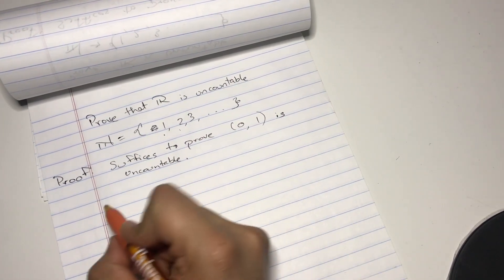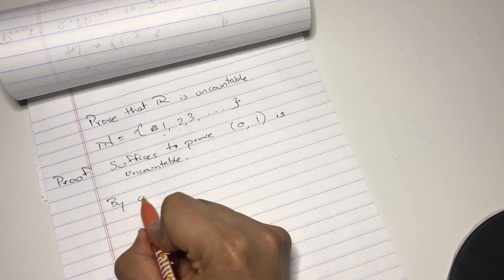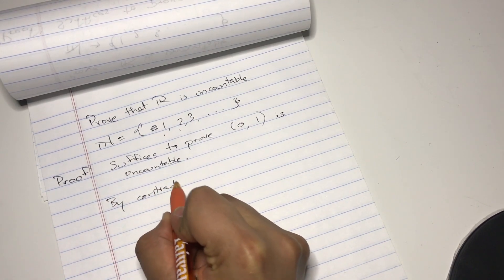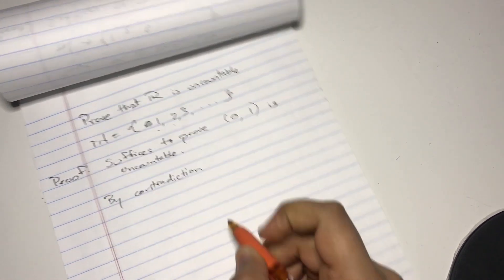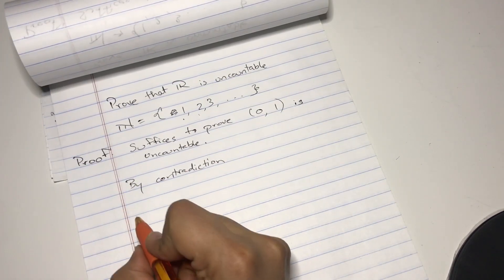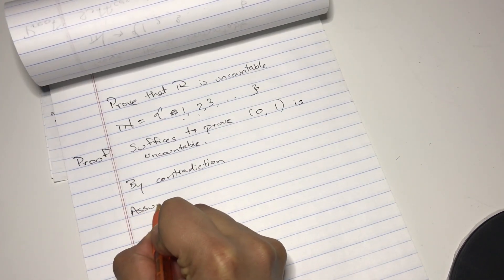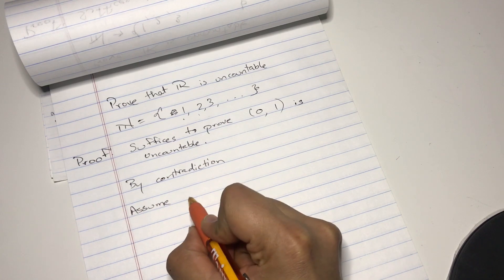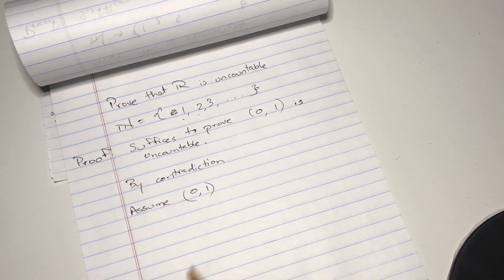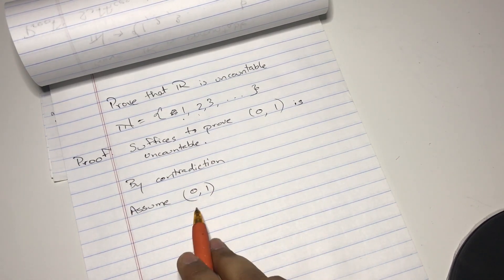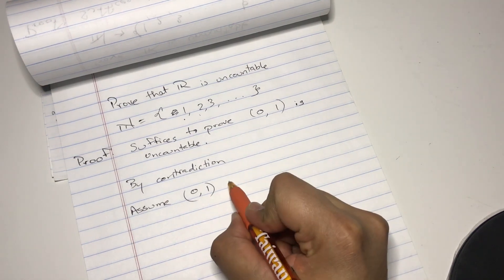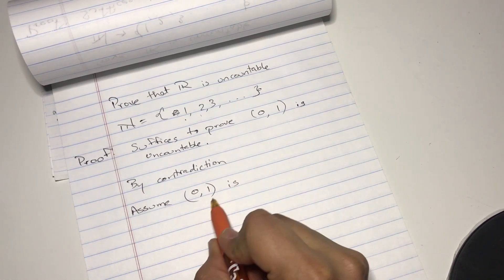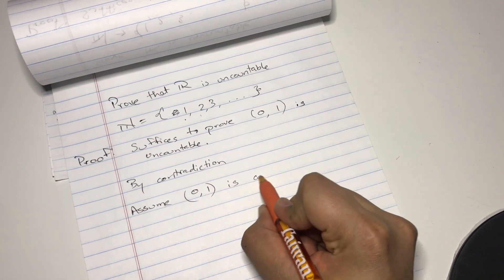So we're actually going to do the proof by contradiction. So we're going to assume that between zero to one all the real numbers are countable.